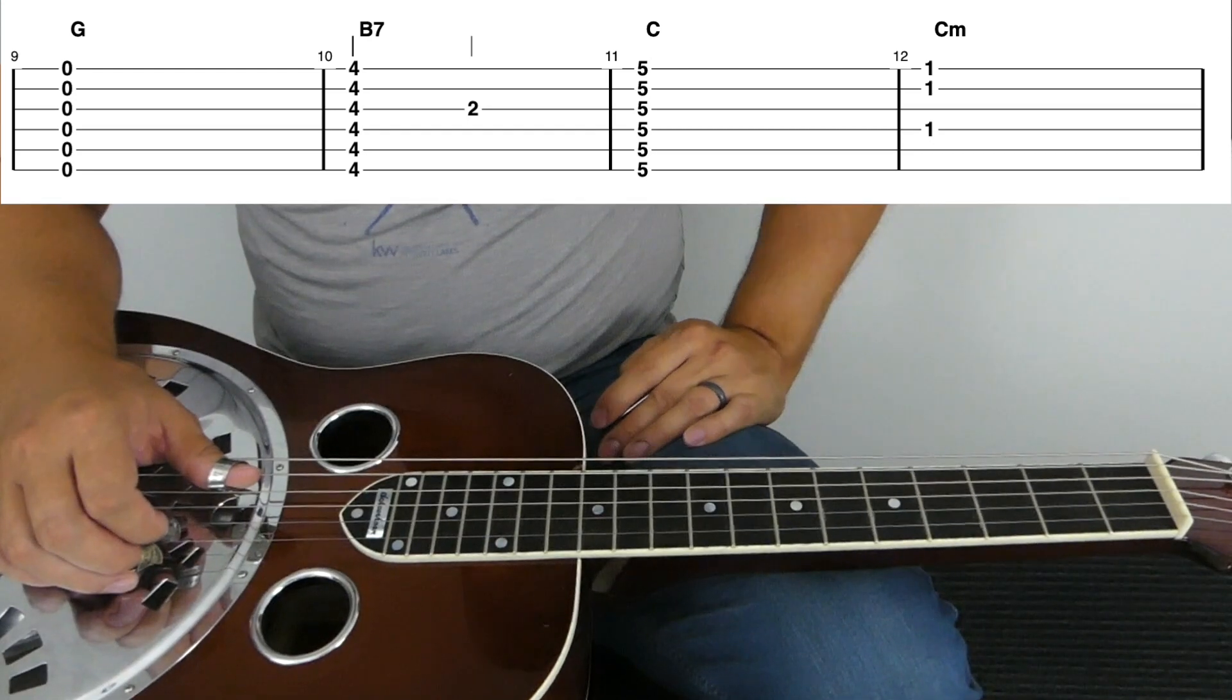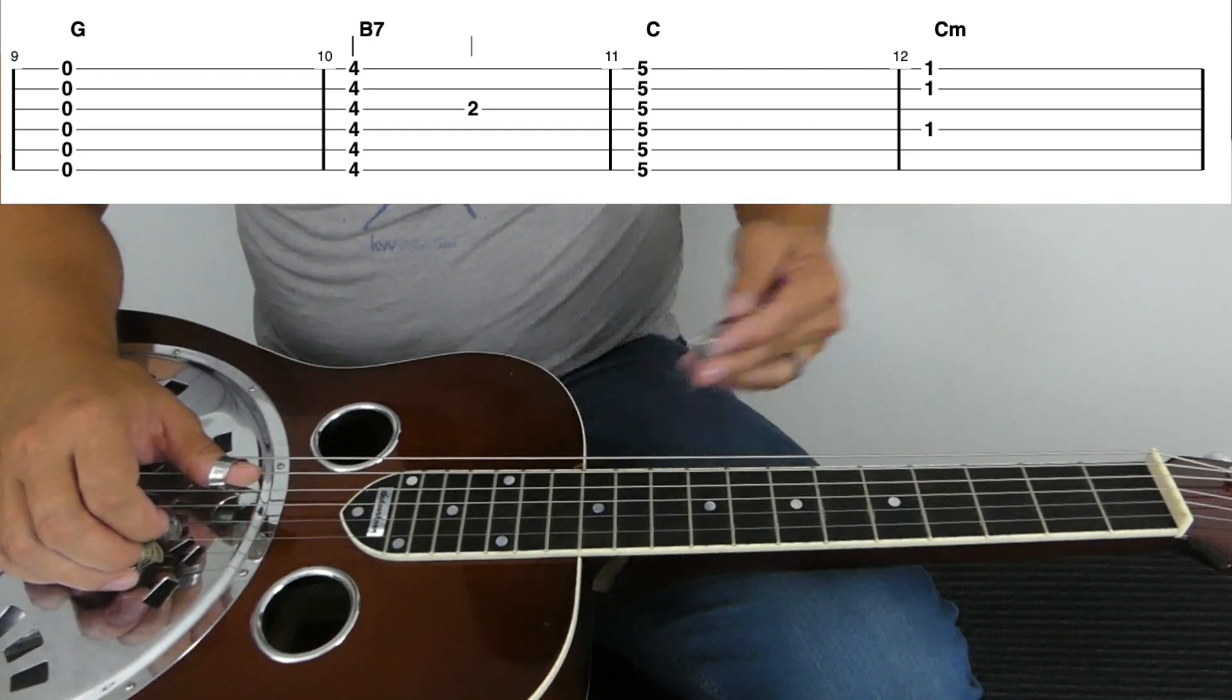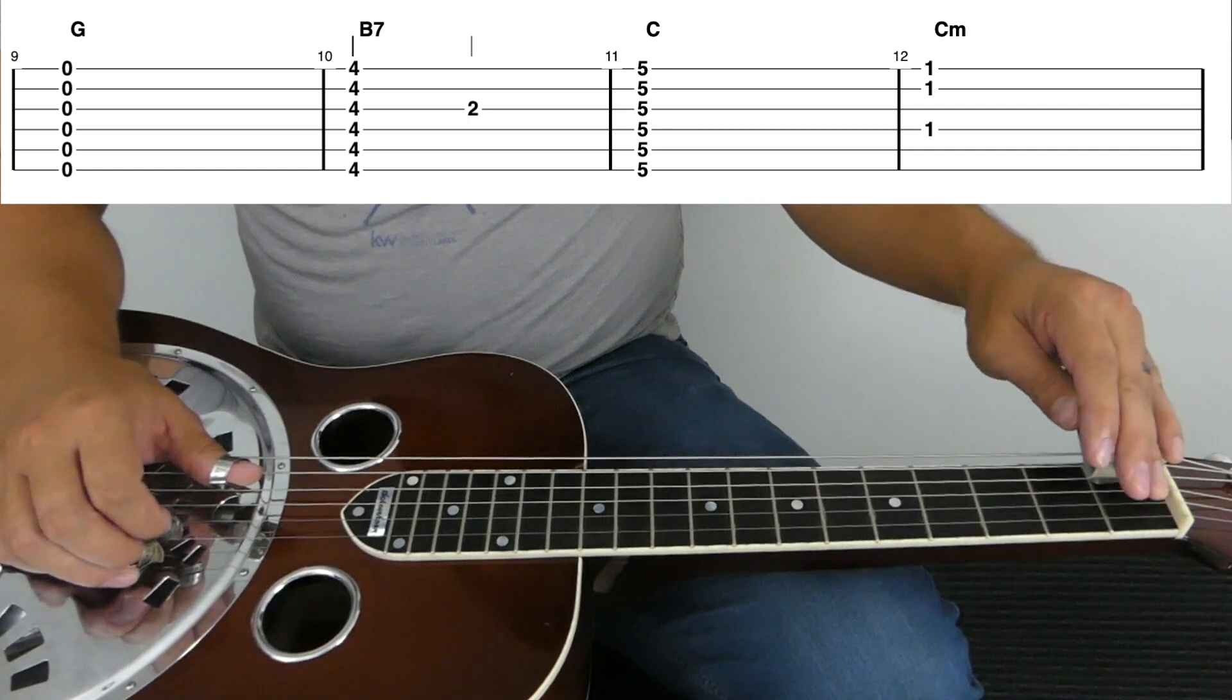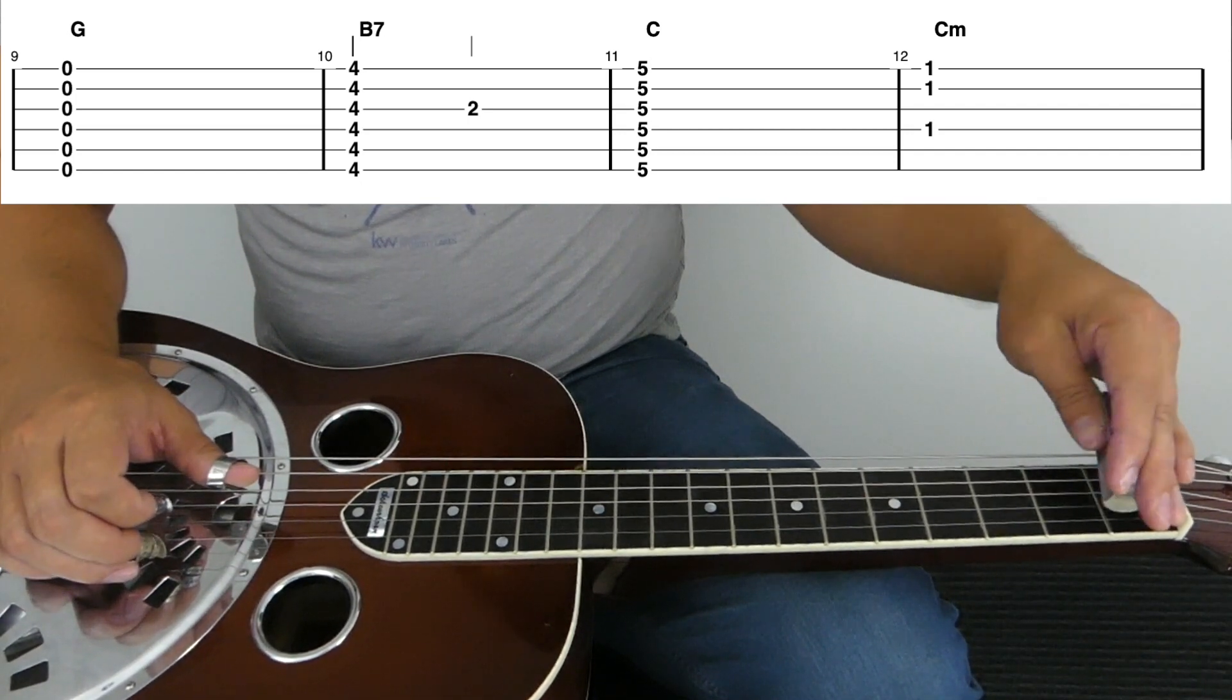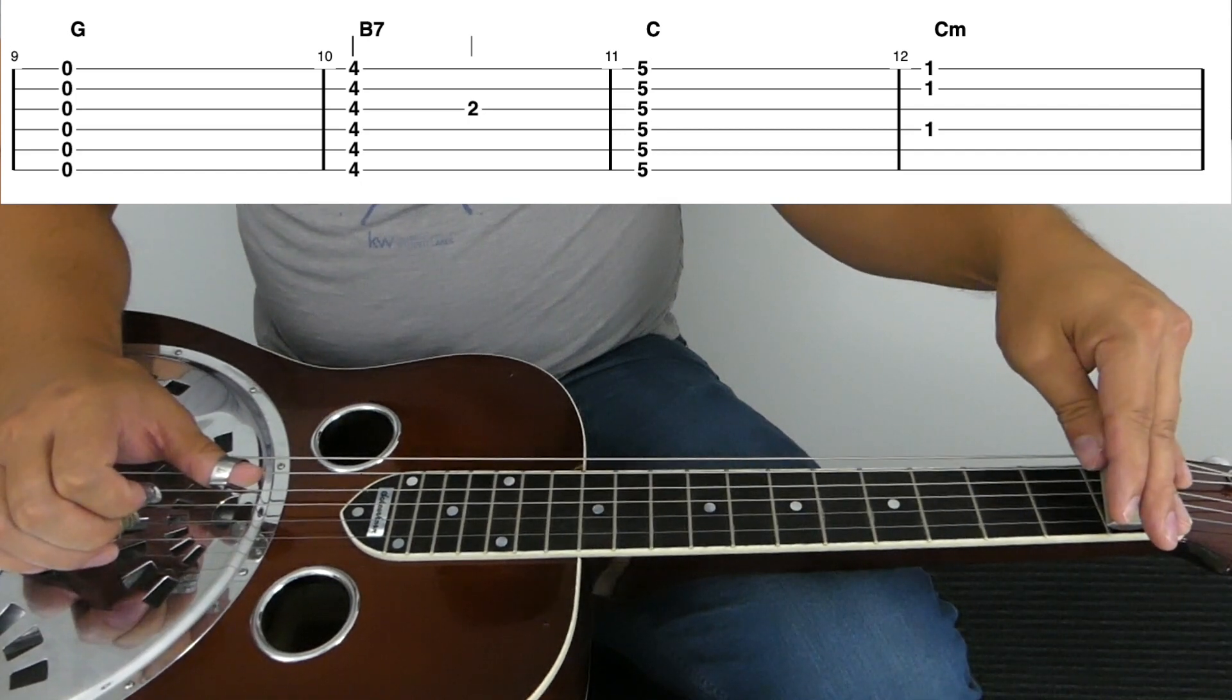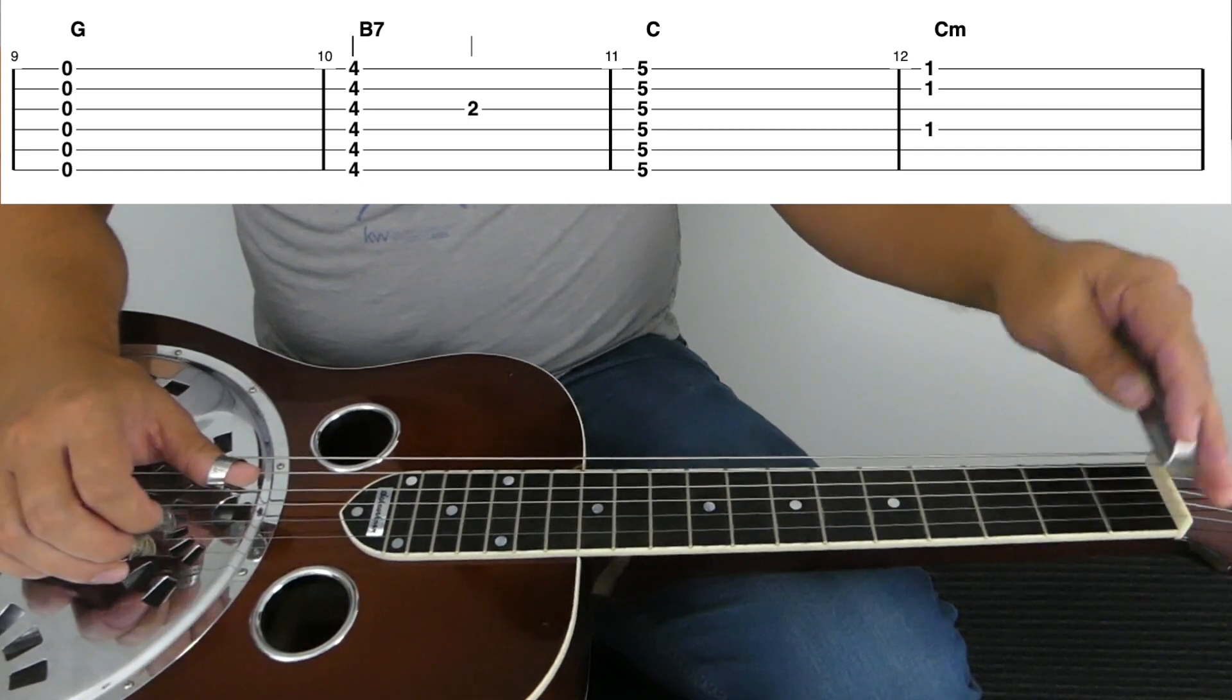And then in measure 12, I'm going to introduce a new minor chord. So I'm going to go to the first fret of the fourth string, first fret of the second string, first fret of the first string.